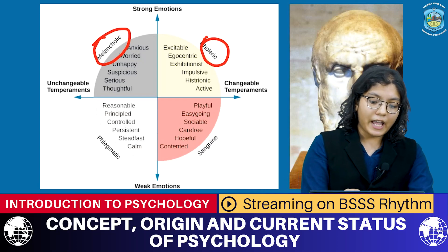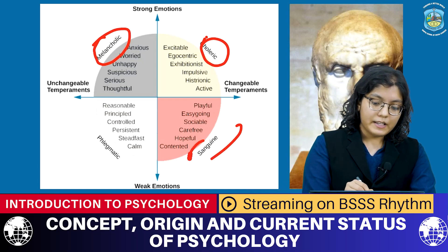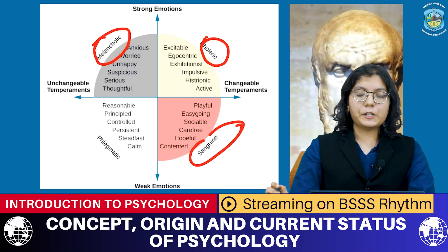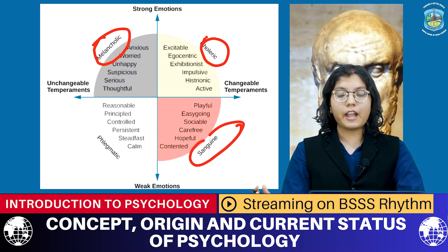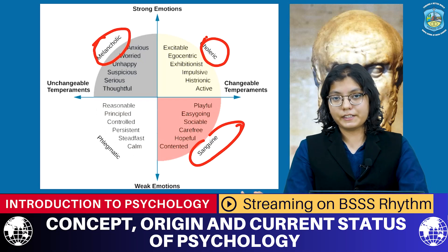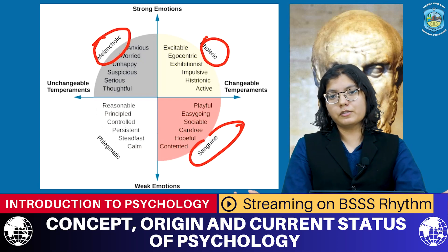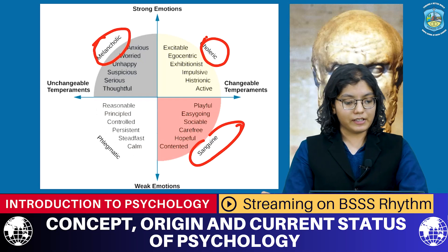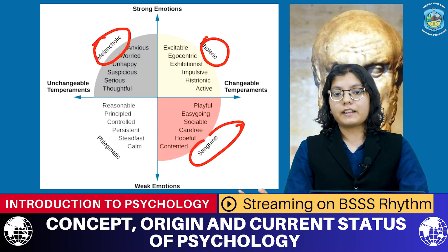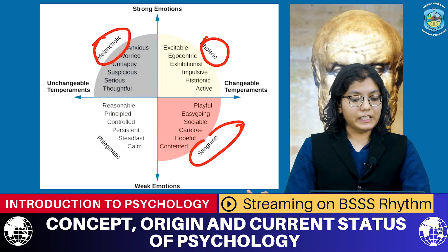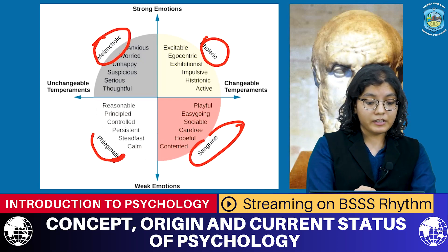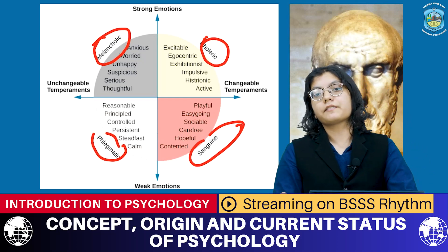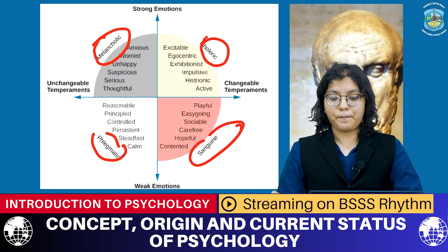Next we have sanguine people. Sanguine people tend to be playful, easygoing, sociable, carefree, hopeful, and contented — all the personality traits you'd want to have in yourself. Finally, we have phlegmatic people. These people are reasonable, principled, controlled, persistent, steadfast, and calm.